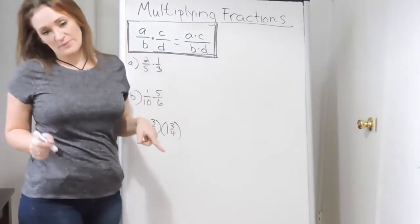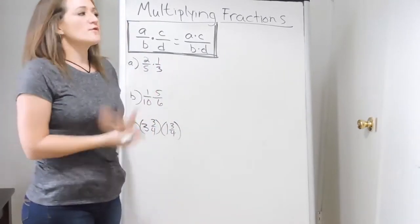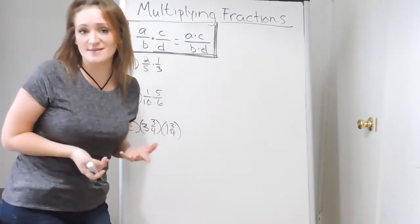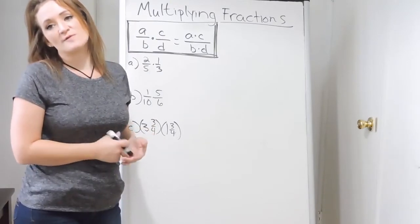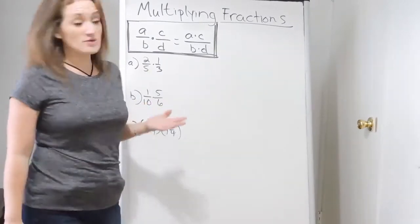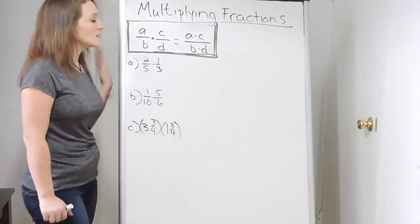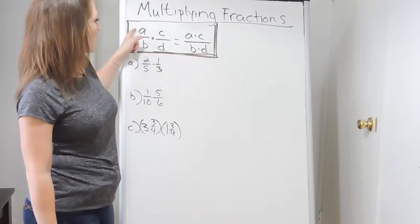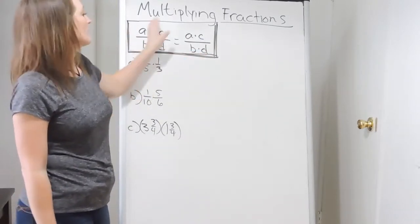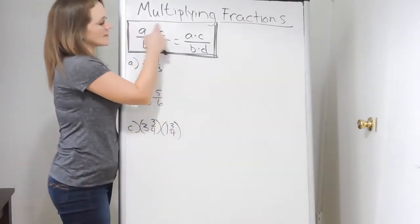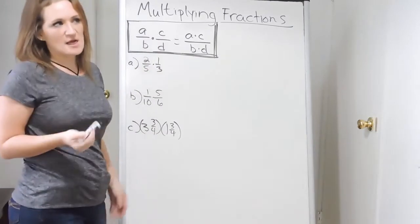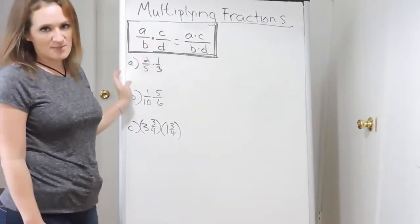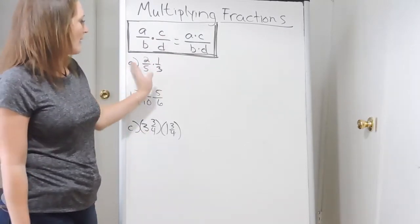The next thing we're going to talk about is multiplying fractions. For the most part, people do prefer to multiply and divide fractions in comparison to adding and subtracting fractions. There are a lot more steps involved when you add and subtract fractions, not as much when you multiply or divide. The book definition says: when you have fraction A over B multiplied by fraction C over D, you get A times C over B times D. In a nutshell, multiply numerator times numerator, denominator times denominator — top times top, bottom times bottom.